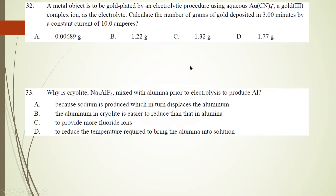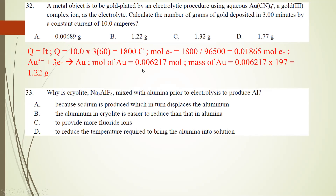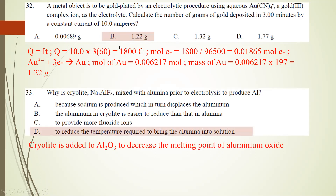Number 32: a metal object is to be gold-plated using a Au(CN)4- gold(III) complex as electrolyte. Calculate the mass of gold deposited in 30 minutes at 10 A. Q = IT = 1800 C. Moles of electrons = 1800/96500 = 0.01865 mol. Since Au3+ + 3e- → Au, moles of gold = 0.006217 mol. Mass = 0.006217 × 197 = 1.22 g. Number 33: cryolite is mixed with alumina prior to electrolysis of aluminum to reduce the melting point of the aluminum oxide.